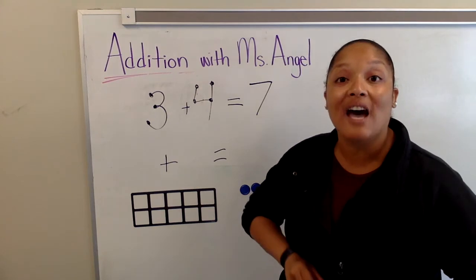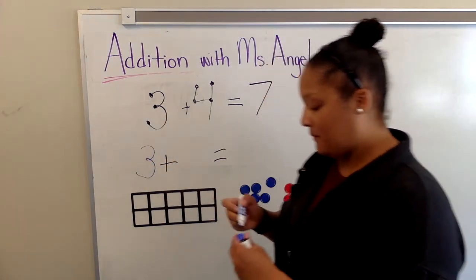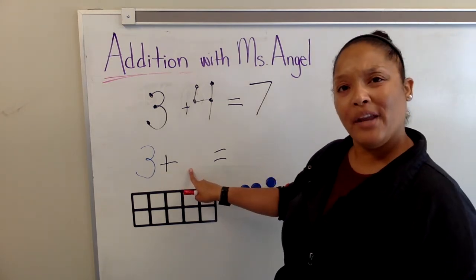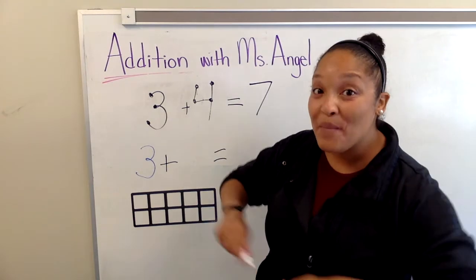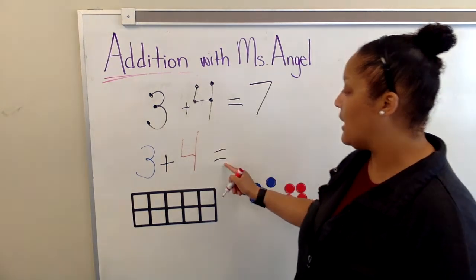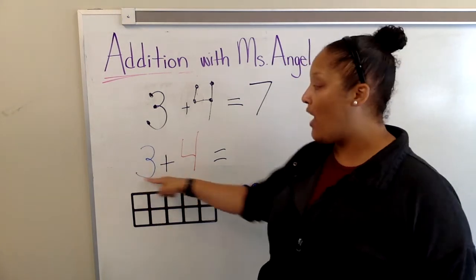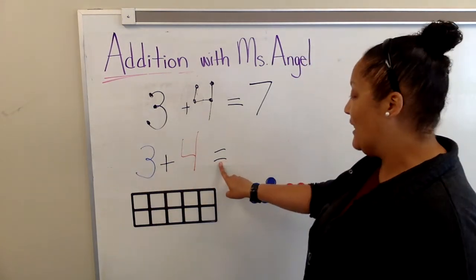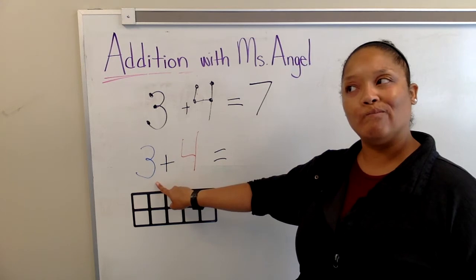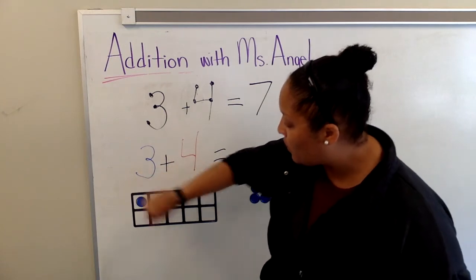Let's try that using the tens frame strategy. We need to write three plus four equals. Let's use the tens frame strategy to find out what this equals. Let's start with the blue dots — how many blue dots do I need? Three blue dots. So I can move over three dots.